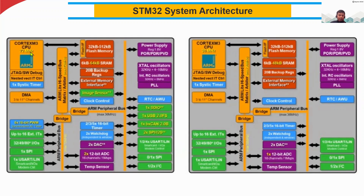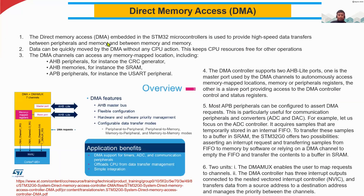The CPU performance will easily get affected and the main program will get slowed down. Instead of using the CPU for the data transfer purpose, we use DMA — another controller. This DMA controller helps all the data transfers between memories and between memory and peripherals. That is the concept of DMA.